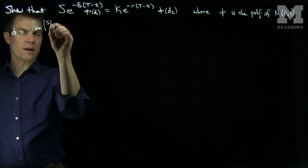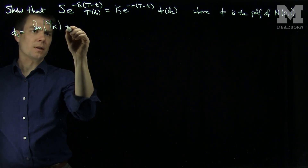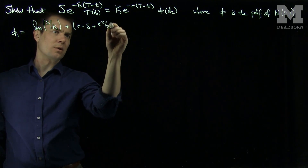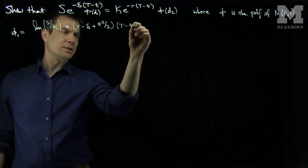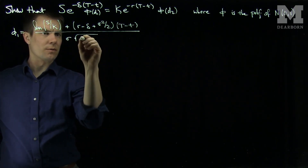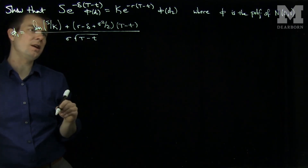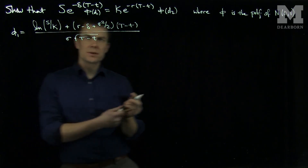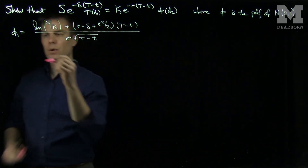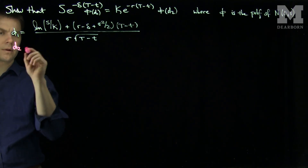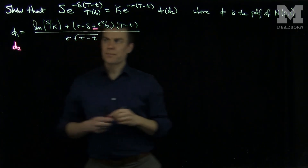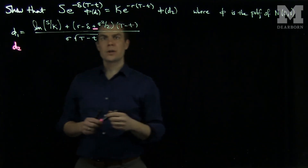d1 is defined as the log of S over K, plus r minus δ plus σ²/2, times (T-t), all divided by σ√(T-t). And d2 is the same formula, with the only difference being a negative sign — so σ²/2 becomes -σ²/2. So we see there is a relationship between d1 and d2.